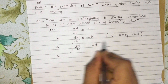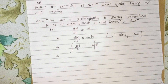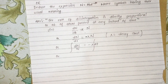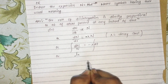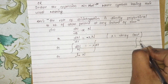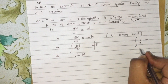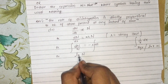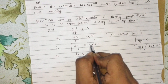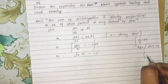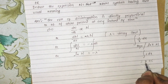Now we integrate. We separate variables to get dn/N equals minus lambda dt. Integrating both sides: the integral of 1/x dx is log x, so we get log N equals minus lambda t plus C, where C is the constant of integration.